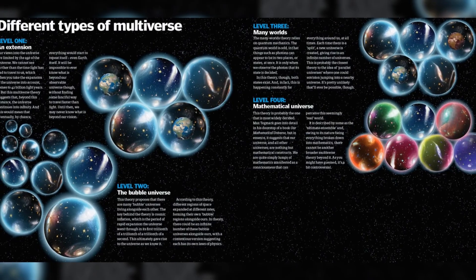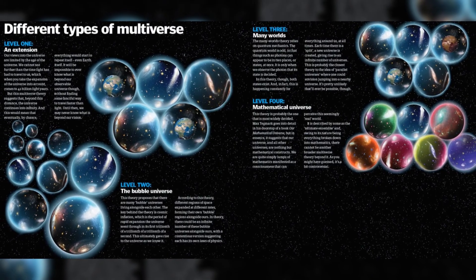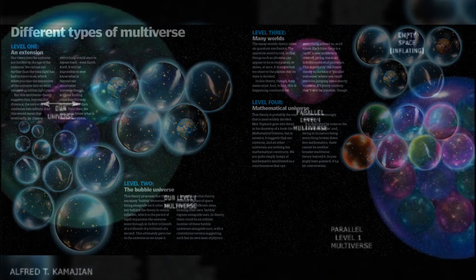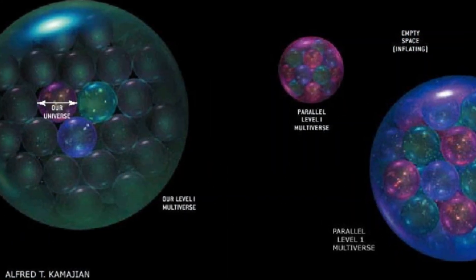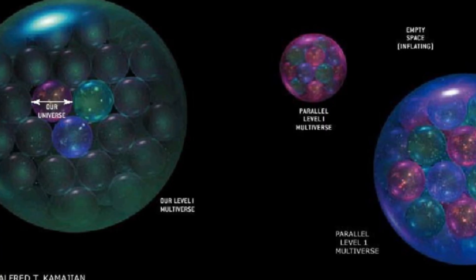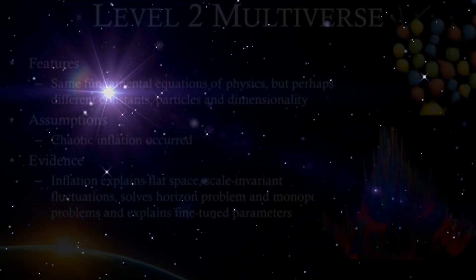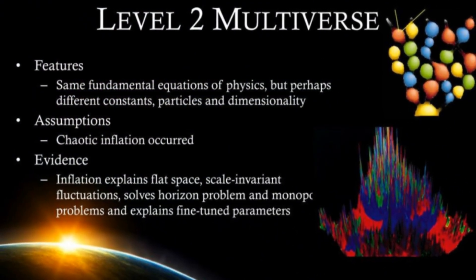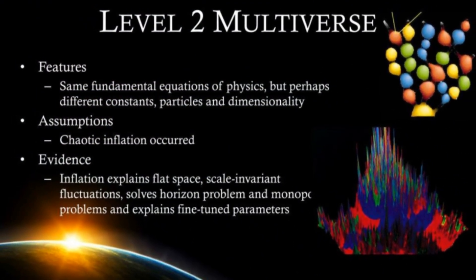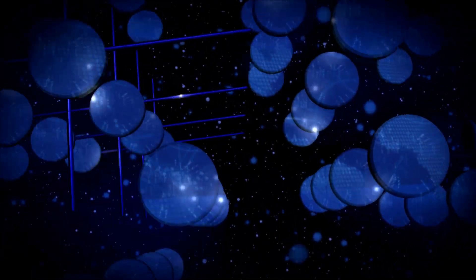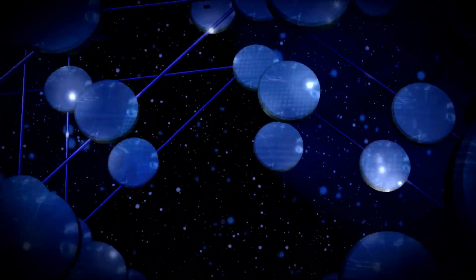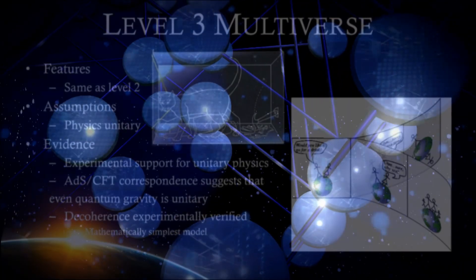Levels of Infinity. Physicist Max Tegmark tried to organize the chaos. He described four levels of the multiverse. Level 1: regions of our own universe beyond what we can ever see, places so distant that light hasn't had time to reach us. Out there, the stars may look the same, but every configuration of matter repeats eventually, meaning there could be another you, unimaginably far away. Level 2: separate bubble universes born from eternal inflation. Each has different laws of physics, different constants, maybe even different dimensions of space and time.